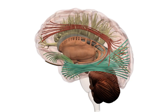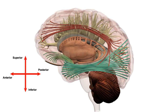The next set of fibres we shall look at are the associational fibres. These fibres connect regions of the brain within a given hemisphere. They are long projection tracts that run either in a longitudinal direction — the anterior to posterior axis — or vertically, the superior to inferior axis, and they are known as fasciculi.